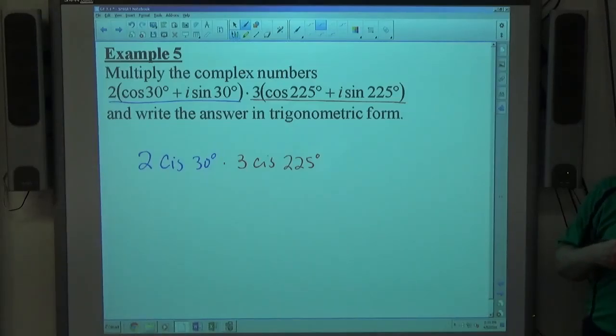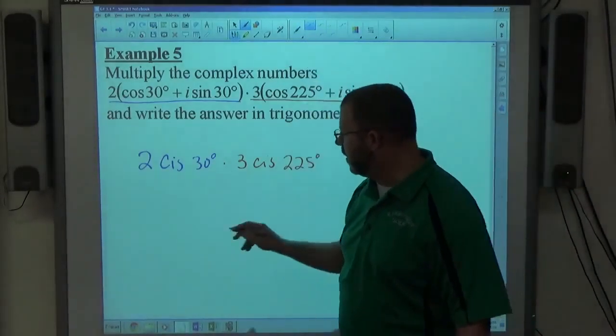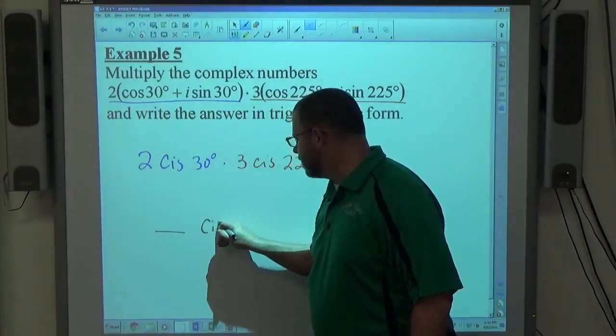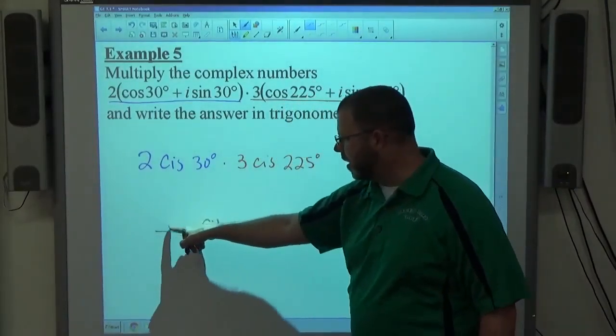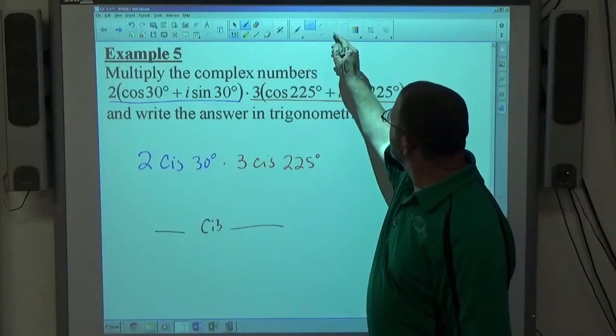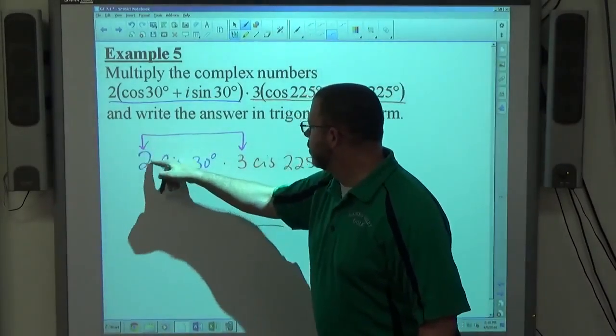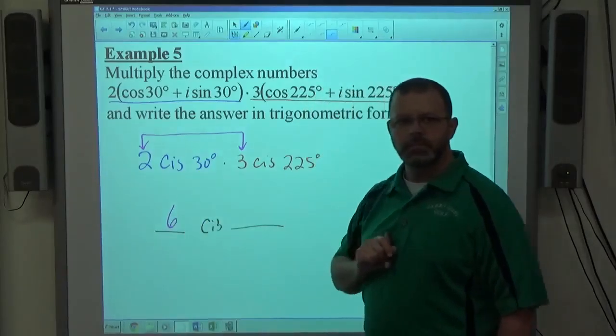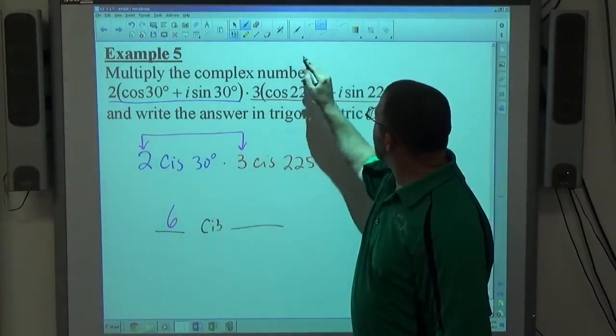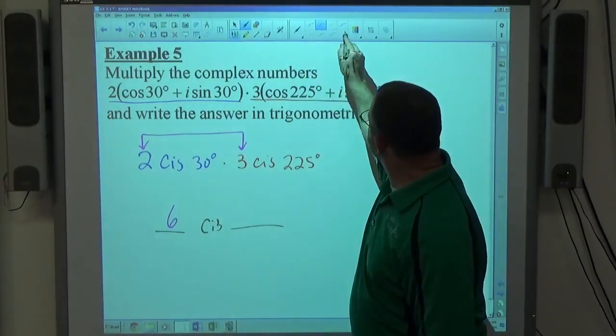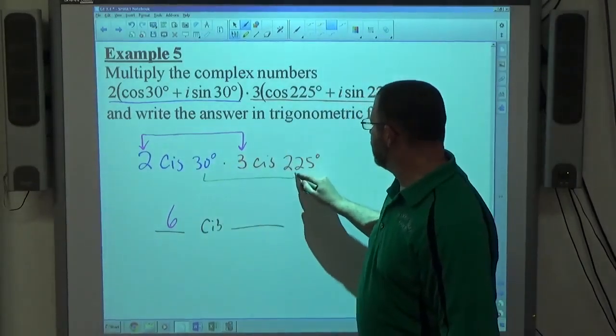We are multiplying the complex numbers. The technique for multiplication states that we're looking for a number cis some angle. To get the number out in front, we're going to multiply the magnitudes. 2 times 3 makes 6. To get the angle, we're going to add the two angles.